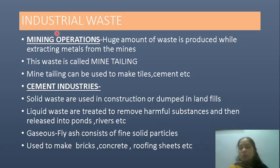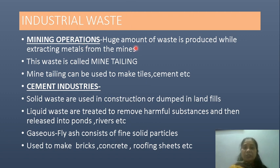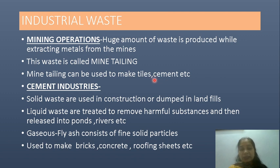Now we come to industrial waste. As the name suggests, it is all waste coming from industries. It can be from mining industries, where they extract metals from their ores from under the earth's crust, producing a huge amount of waste. This waste is given the name mine tailing. Mine tailing can be used to make tiles, cement, etc. Then we have cement industries, where solid waste is used in construction or dumped in landfills.